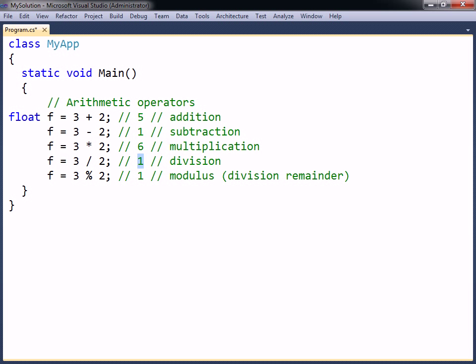Notice that the division sign gives an incorrect result. This is because it operates on two integer values, and will therefore round the result and return an integer. To get the correct value, one of the numbers needs to be converted into a floating-point number.